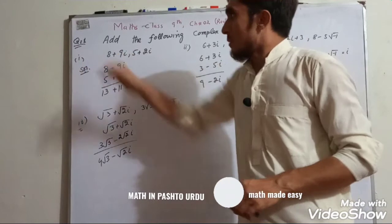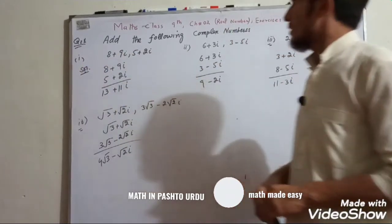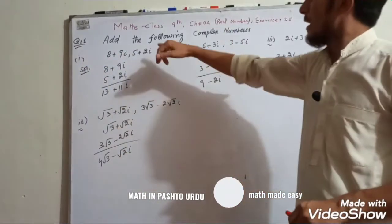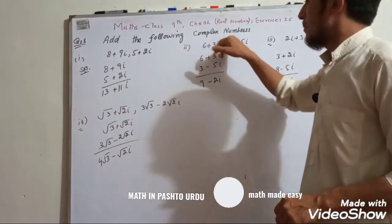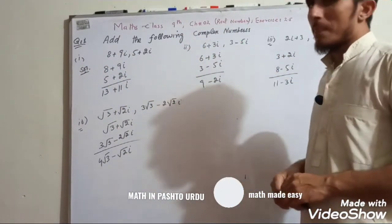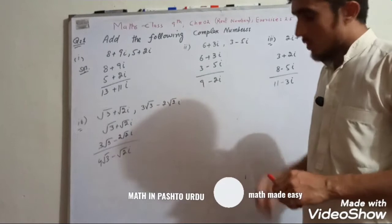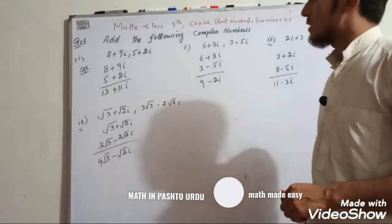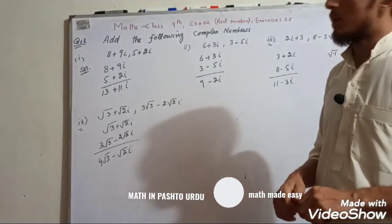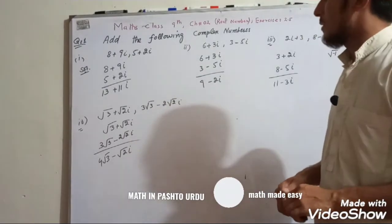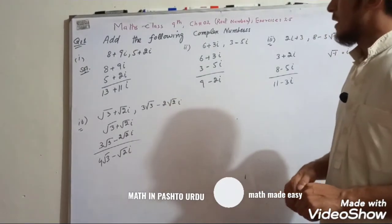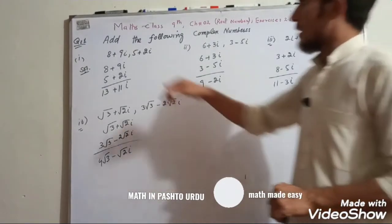Question No. 1: simplify the following complex numbers. The complex number is given.